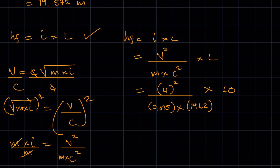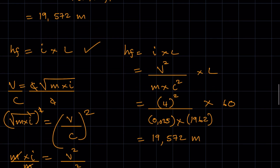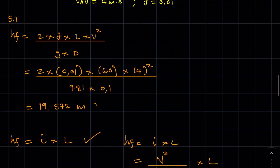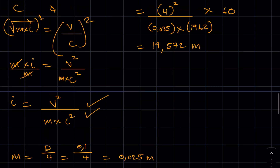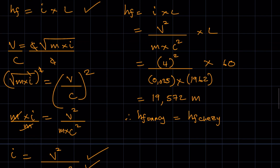The pipe length is 60, and if you punch this into your calculators you get 19.572 metres. As you can see, the frictional head loss we get when using Chezy's formula is the same as the frictional head loss we get when using Darcy's formula. Therefore HF Darcy equals HF Chezy. That's how you would approach a problem like this one. If you have any questions, get into the comment section and let's talk about it — see you in the next one.